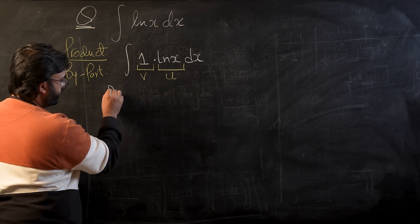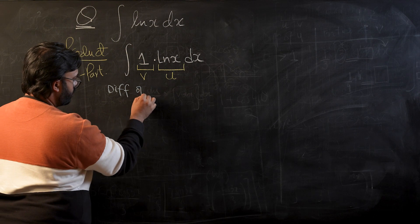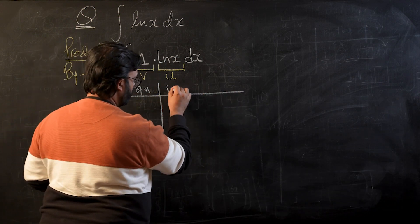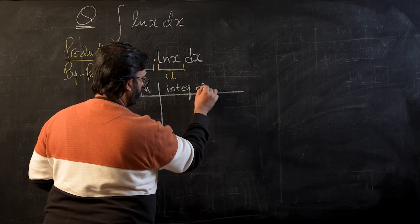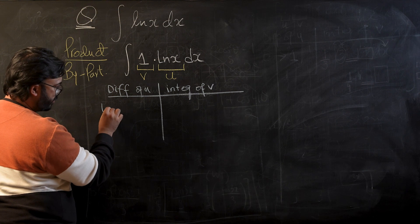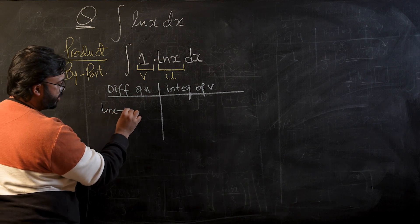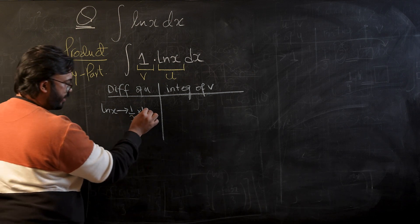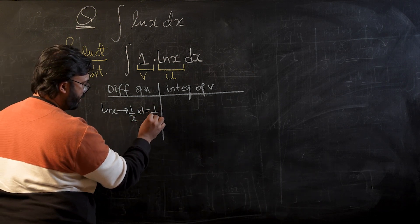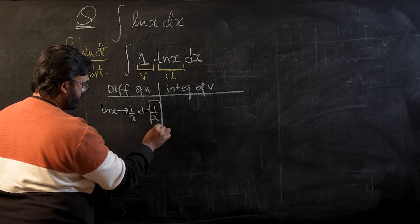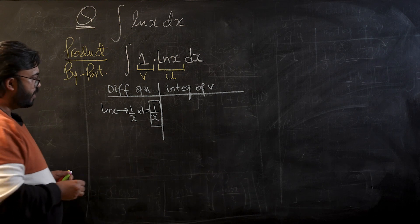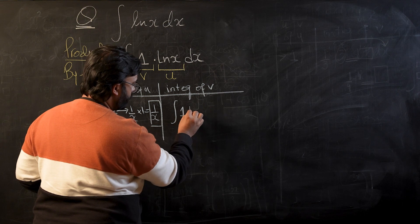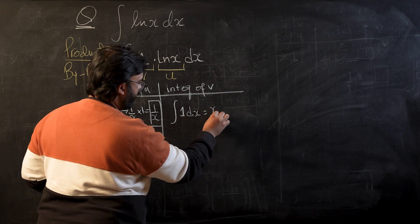Now we're going to need two main things: differentiation of u and integral of v. So u is log of x. If you try to differentiate it, that would become 1 over x times differentiation of the inner function, that is 1. So the differentiation of ln x would be 1 over x. This is the differentiation of u. For integral of v, v is 1, so if I want to integrate 1 with respect to x, it will simply be x.